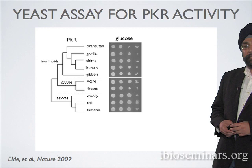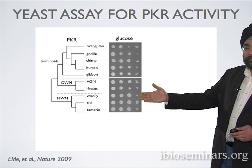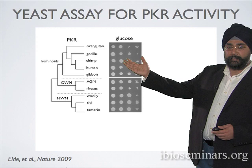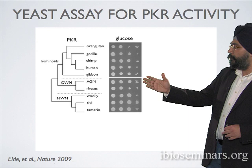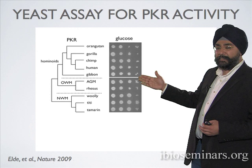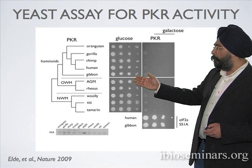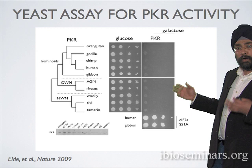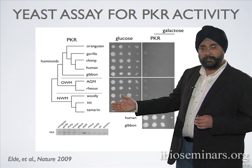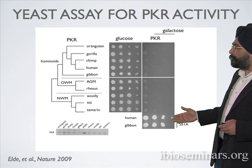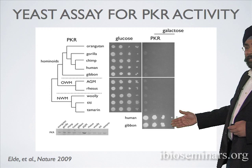Nels Eldie, a postdoc in the lab, took PKR genes from a panel of primates — hominoids, old-world monkeys, and new-world monkeys — and put them in yeast on a galactose promoter. On glucose, the PKR gene is silenced and all yeasts grow perfectly fine even in serial dilution. However, as soon as you turn on PKR by putting the yeasts onto galactose plates, no yeast grows — meaning all these PKR alleles have conserved the property of binding and phosphorylating yeast EIF2-alpha, remarkable given the large degree of evolutionary divergence. This is confirmed by the fact that engineering a mutation in the phosphorylation site removes all growth inhibition.